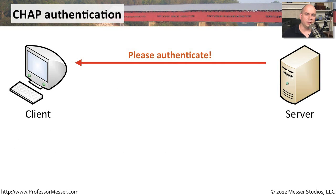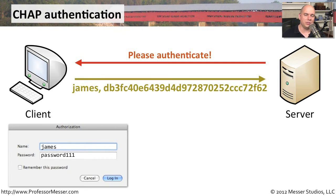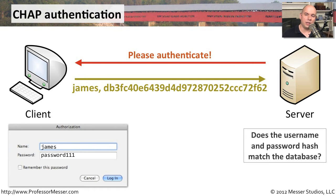The challenge from the server comes back asking for authentication. We type in our username and password, or it will be a username and password previously stored. We then hash the password — we're not going to send the password in the clear. We use a mechanism to hash it, then send back to the server our username and the hashed password. On the other side, the server compares the hashes in its database to the hash you've sent, and you gain access to the network.